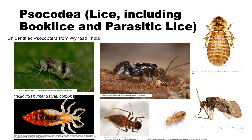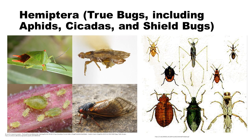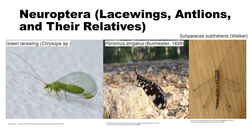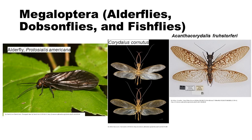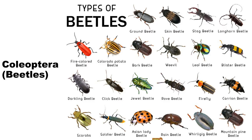Mantodea — mantises. Psocoptera — including book lice and parasitic lice. Thysanoptera — thrips. Hemiptera — true bugs, including aphids, cicadas, and shield bugs. Neuroptera — lacewings, antlions, and their relatives. Megaloptera — alder flies, dobsonflies, and fish flies. Raphidioptera — snake flies. Coleoptera — beetles.